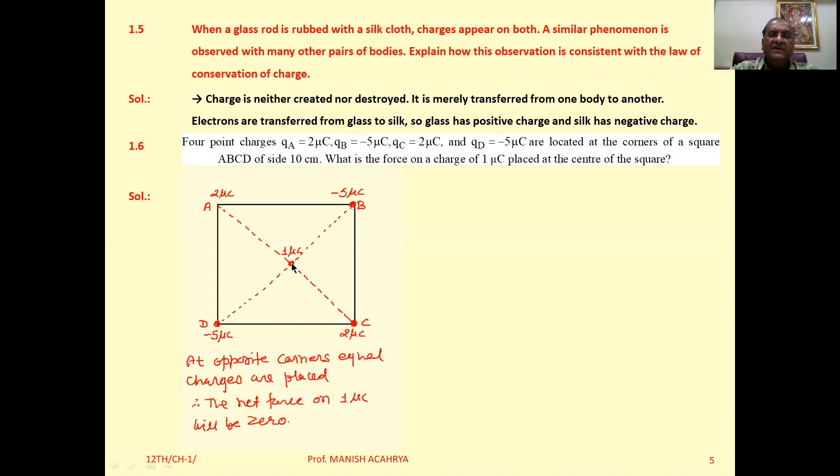Similarly, at B and D, there are also identical charges, and the one microcoulomb charge is at the center of the line joining B and D because they are diagonally opposite. So again, the net force on the one microcoulomb charge will be